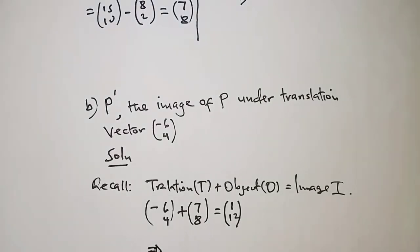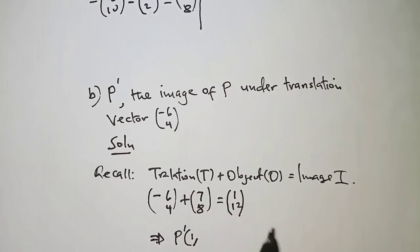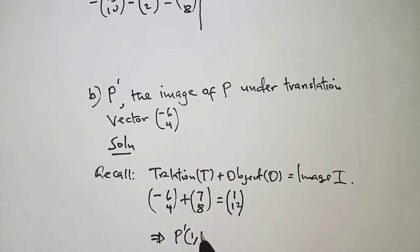So that simply implies that point P prime is - now we get the coordinates - x coordinate is 1, the y coordinate is 12.